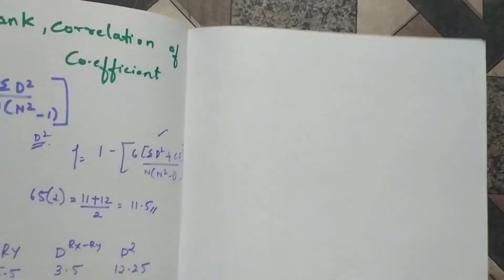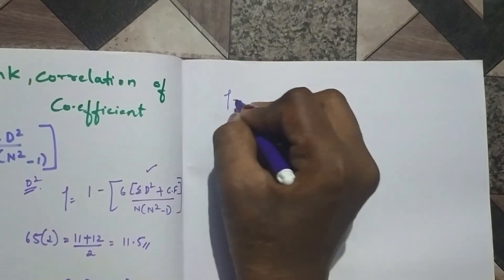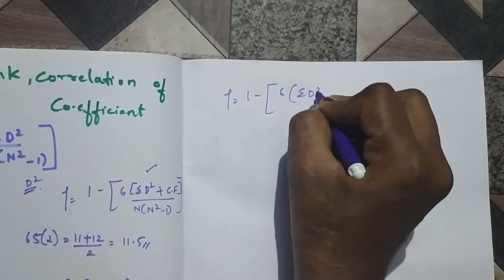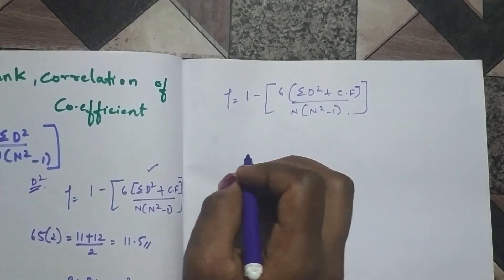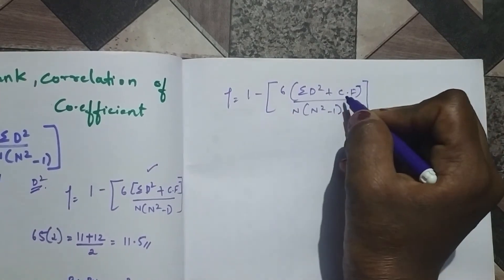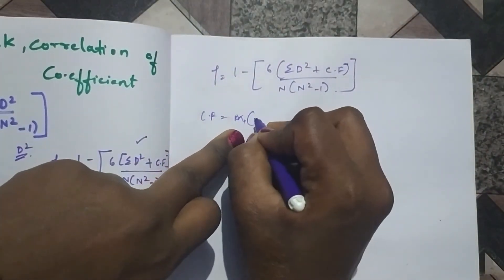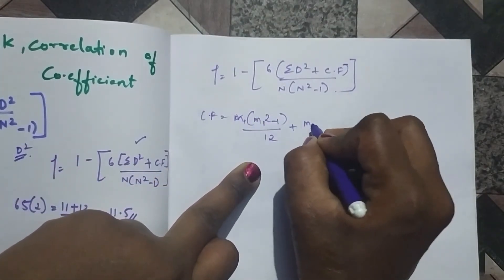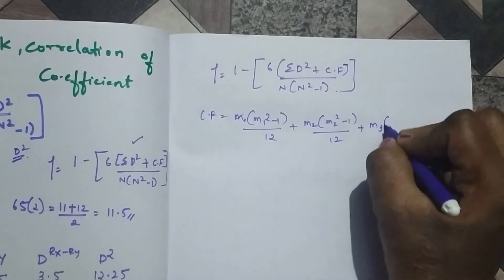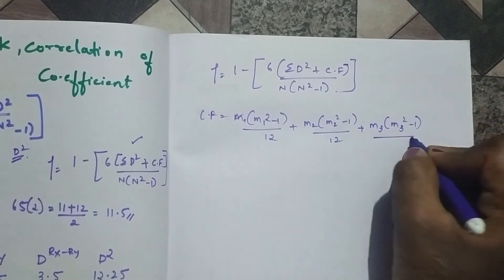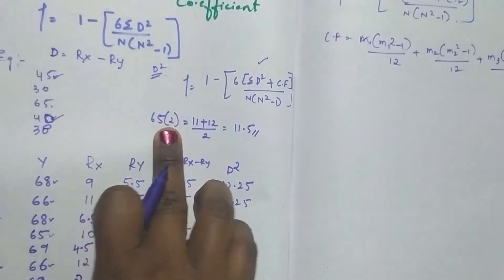Now let's substitute in the formula. Since we got many ties in the ranking, we use the formula: 1 minus 6 times (summation d² plus correlation factor) divided by n times (n² minus 1). We need to find the correlation factor. The correction factor formula is: M(M²-1)/12 for each tie group, summed together. We have 5 tie groups here.